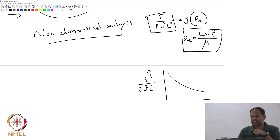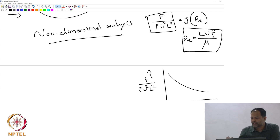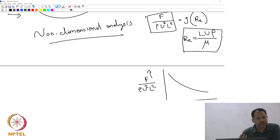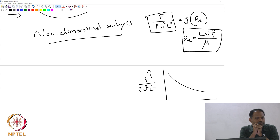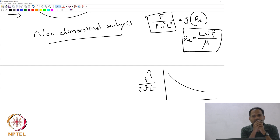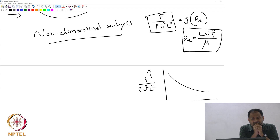The question is how does one end up with such a relation. We may not know exactly what g is. Non-dimensional analysis is not going to tell you whether this particular form is Reynolds squared, or exponential of Reynolds, or sinusoidal of Reynolds — we would not get that. But we will know what numbers are going to be connected by a particular form of function, and that is all we care about, because things basically get into a compact form.